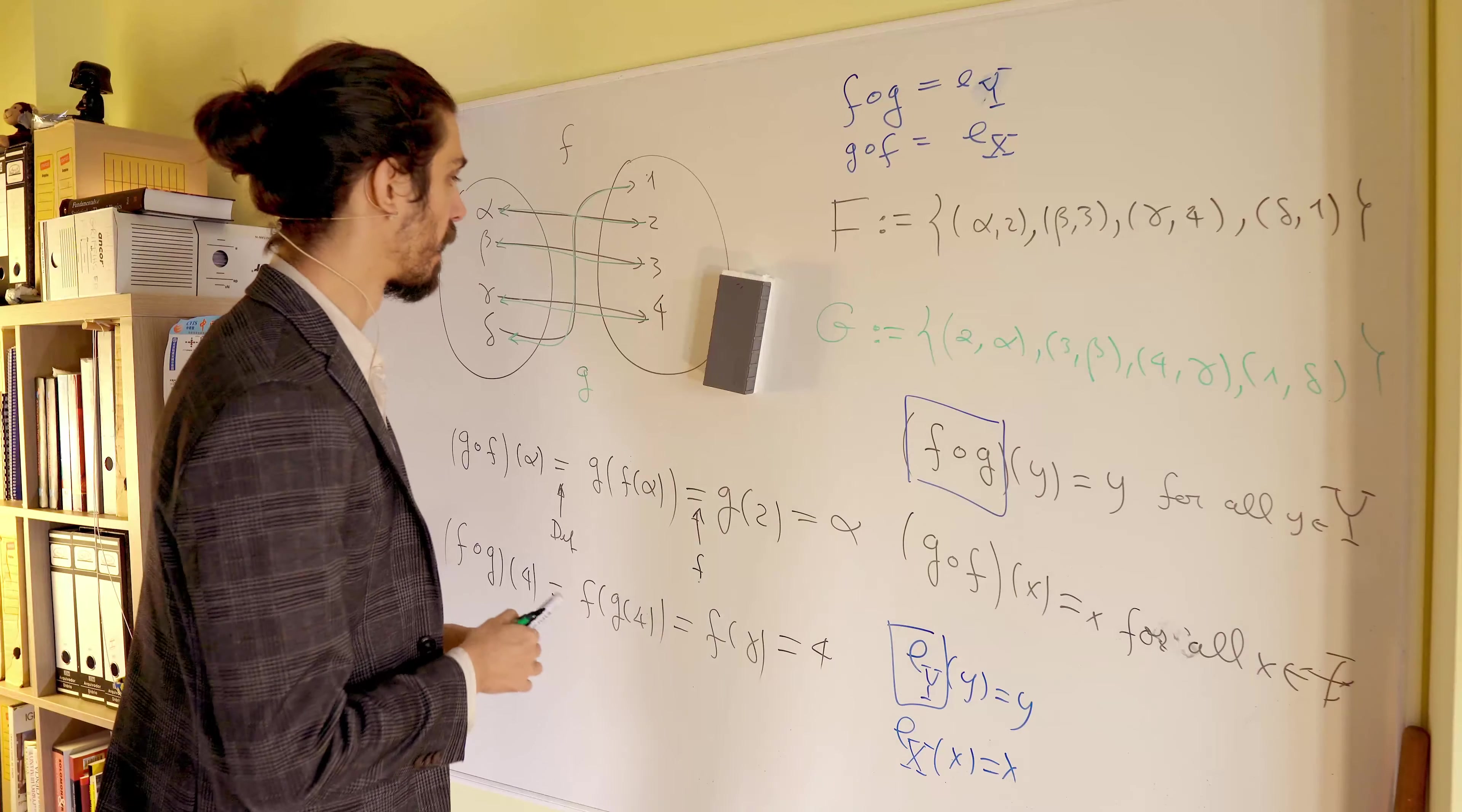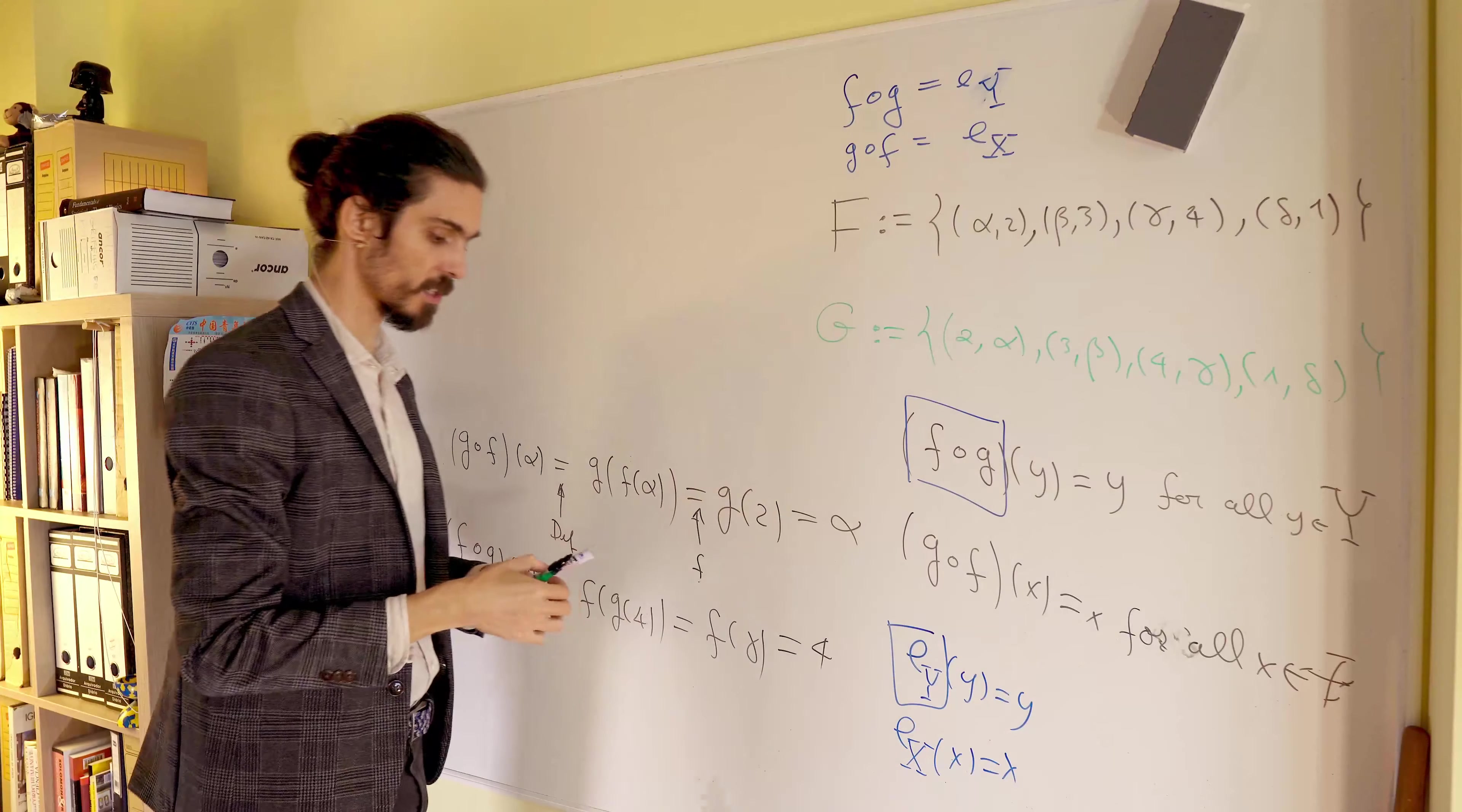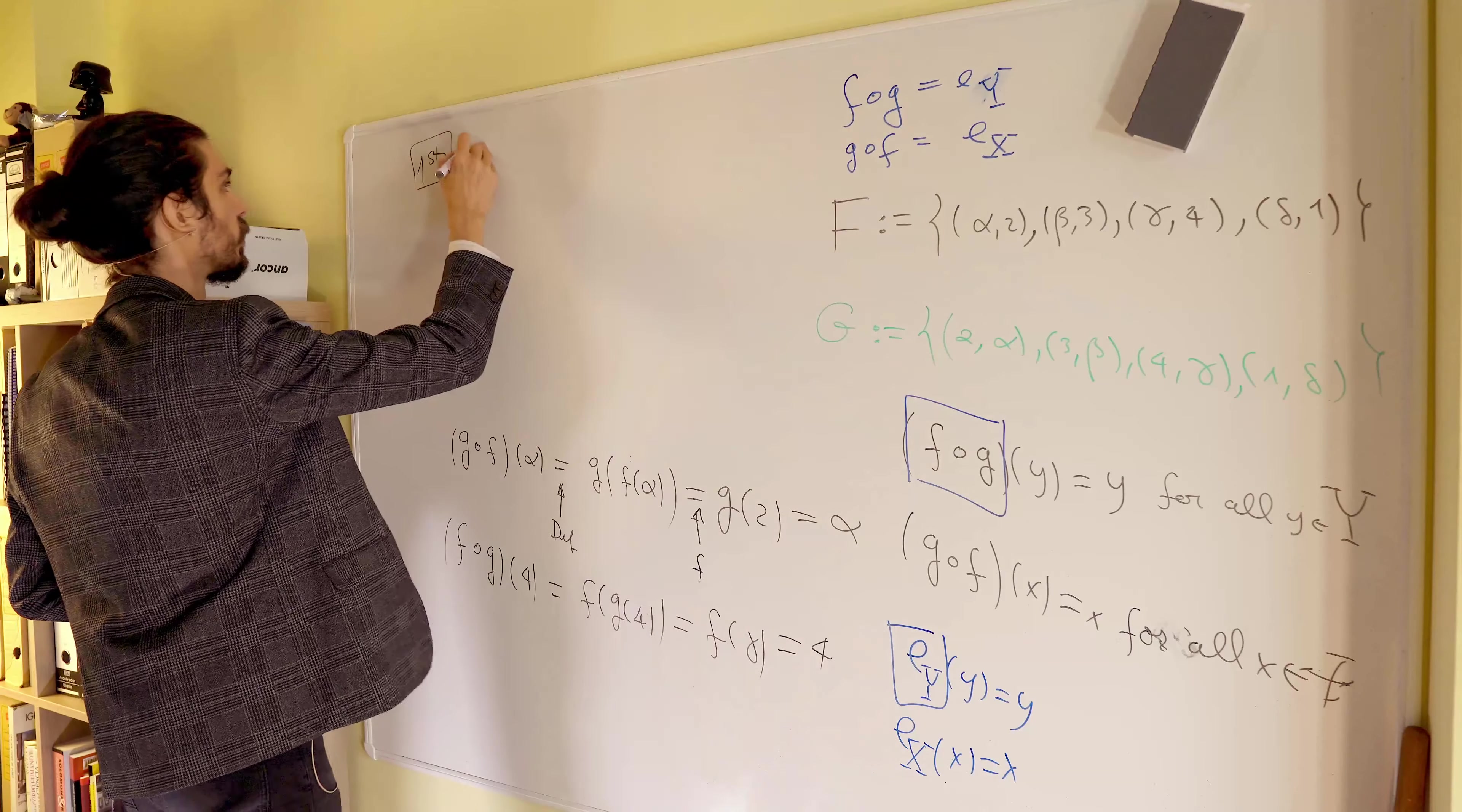Now, let's make three important observations regarding these functions. The first observation is as follows. So first observation. If you start with a function, if that function has an inverse, that inverse is unique. So, unique.